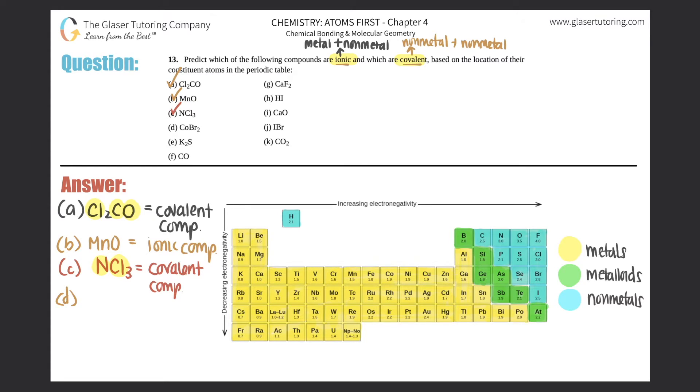D, CoBr2, cobalt-2 bromide. So cobalt is over here, it's a metal, so you probably know what it is. And just to show you, bromine's over here. It's a metal and a non-metal, so this has to be an ionic compound.